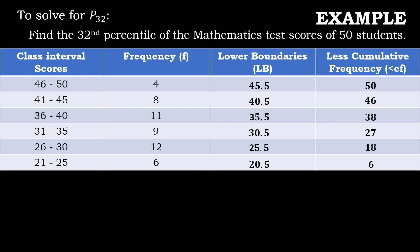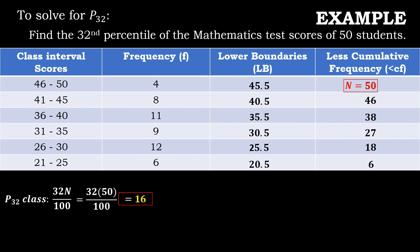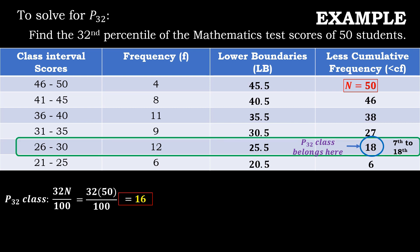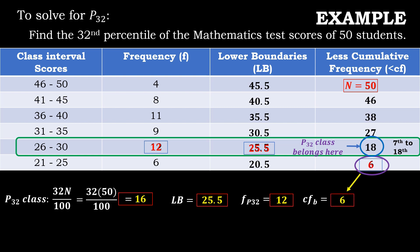Now, to solve for the 32nd percentile, we need to find first the 32nd percentile class, which is 32N divided by 100, where our N is equal to 50. So, 32 times 50 divided by 100 is equal to 16. Therefore, the 32nd percentile class is at the 16th data. The 16th data belongs to the less cumulative frequency which is 18, representing the 7th to 18th data. Thus, we will focus on the row from the class interval 26 to 30. In this class interval, our lower boundary is 25.5, frequency is 12, less cumulative frequency before it is 6, and our I is equal to 5.